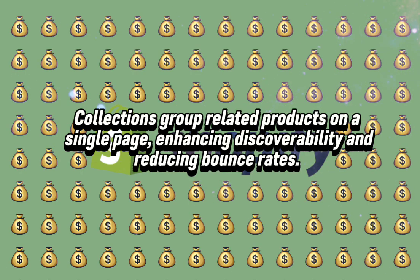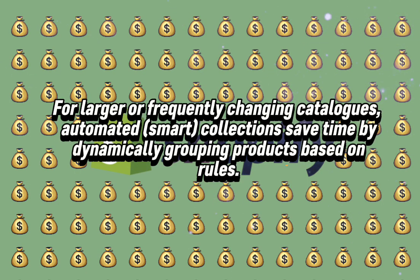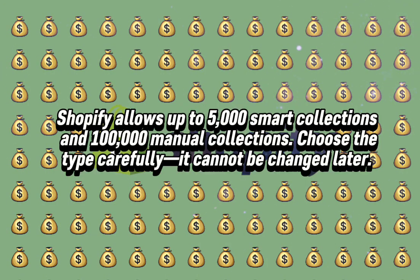Collections group related products on a single page, enhancing discoverability and reducing bounce rates. For stores with limited products, manual collections offer precise control. For larger or frequently changing catalogues, automated smart collections save time by dynamically grouping products based on rules. Shopify allows 5,000 smart collections and 10,000 manual collections — choose the type carefully, as it cannot be changed later.